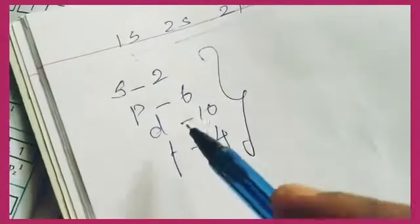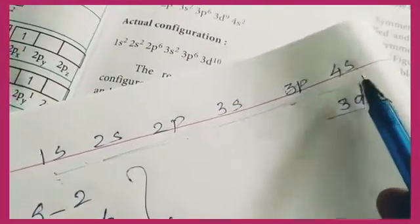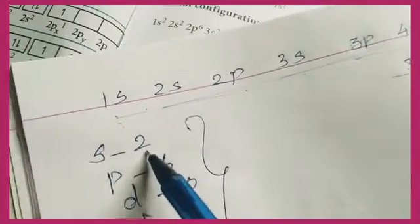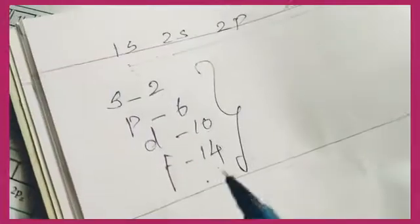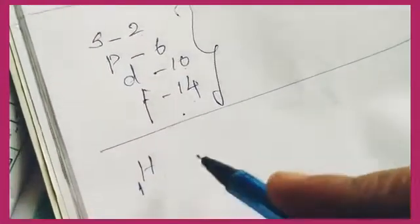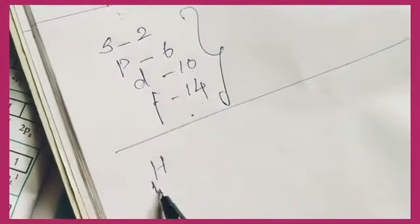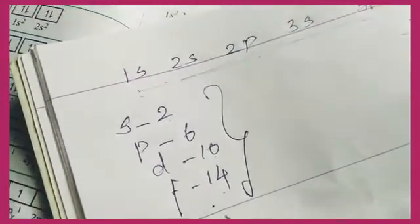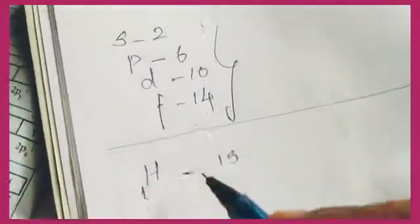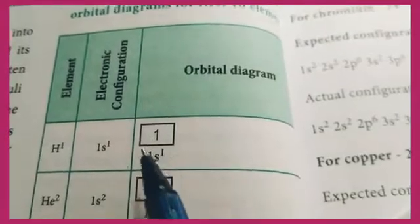The first element is hydrogen. The atomic number of hydrogen is 1. Atomic number represents the number of electrons present in an atom. So hydrogen has 1 electron. We fill the electronic configuration starting with 1s. Since we have one electron, the configuration is 1s¹. In the orbital diagram, we have one box for 1s with one electron.